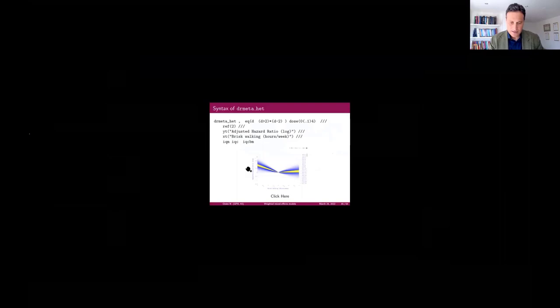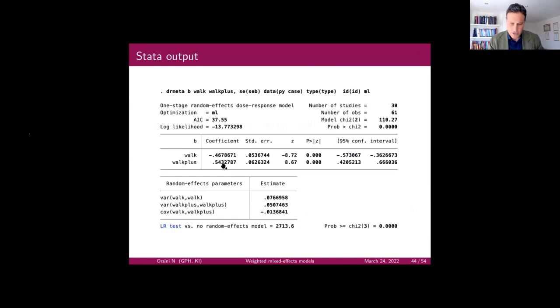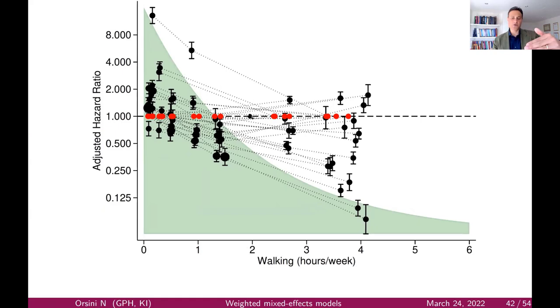The turning point — the threshold effect — happens here at two hours per week. These are simulated data, so the speaker knows the threshold is at two, and there is no data whatsoever at two. It is interesting, but it helps reflect that uncertainty about the treatment effect depends on the distance from whatever reference group is picked.